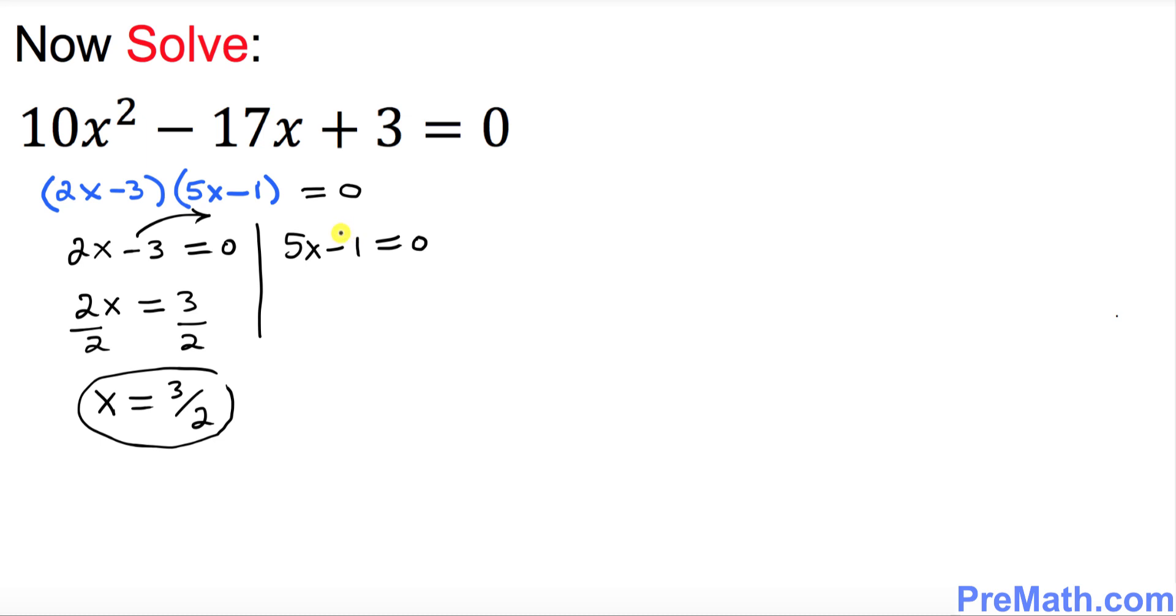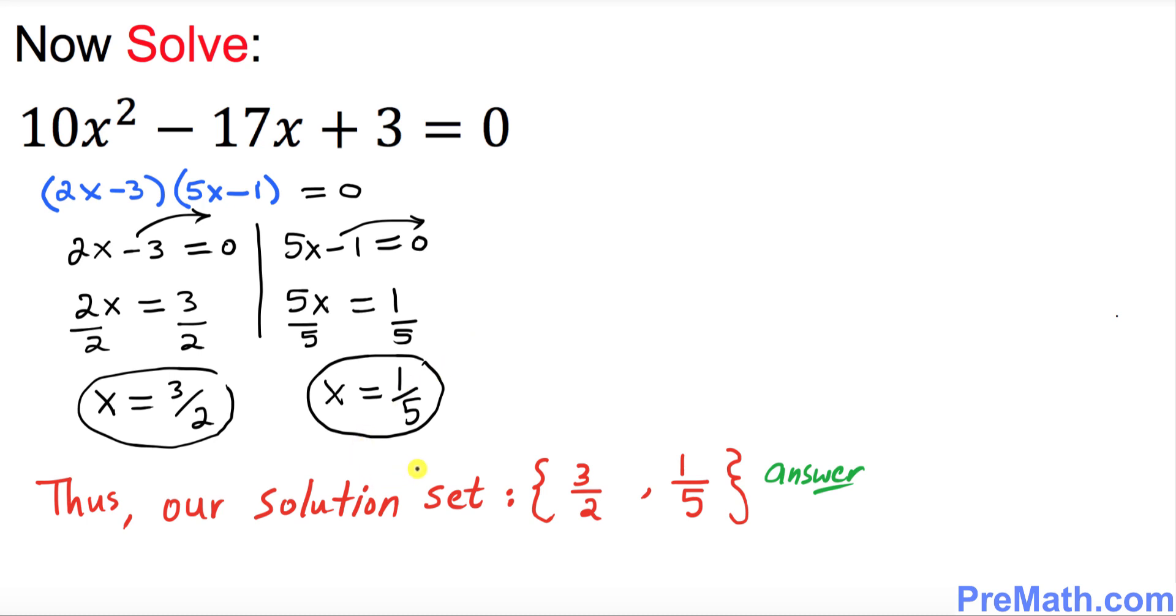Let's do the same thing on this side. Move this negative 1 on the other side, becomes positive 1, and divide both sides by 5. So this cancels out 5 and 5, so x equals 1 over 5 is another solution. Thus our solution set turns out to be 3/2 and the other solution is 1/5, and that's our answer.